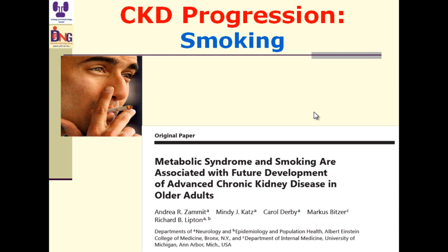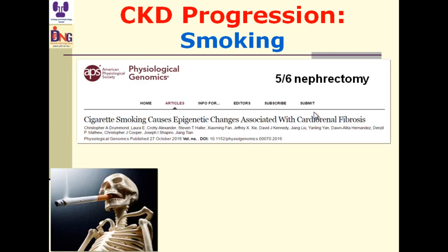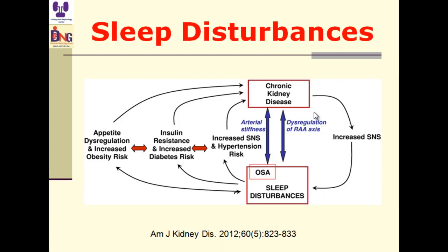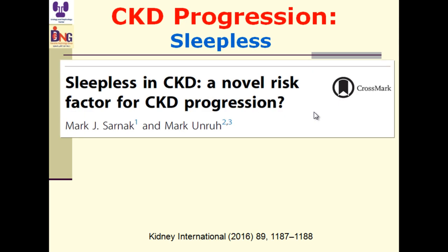Smoking is kidney poison. Irrespective of anything, we should educate patients in simple terms: smoking is kidney poison. A 5/6 nephrectomy CKD model study showed smoking reduces microRNA-29B3, which is anti-fibrotic. Sleep disorders are also bad: obstructive sleep apnea and sleep disturbances are associated with more occurrence and progression of CKD. Sleeplessness in CKD is a novel risk factor for CKD progression. We should educate our patients about healthy sleep.